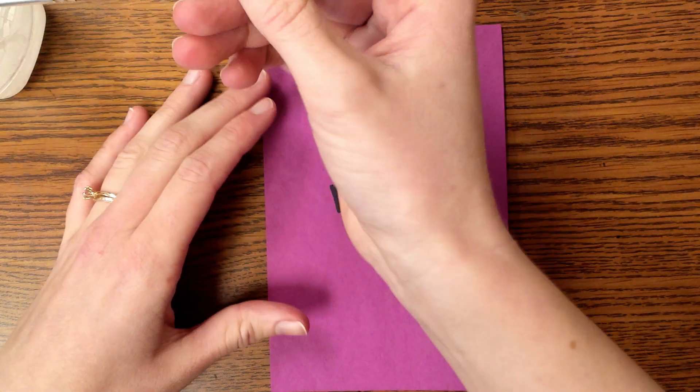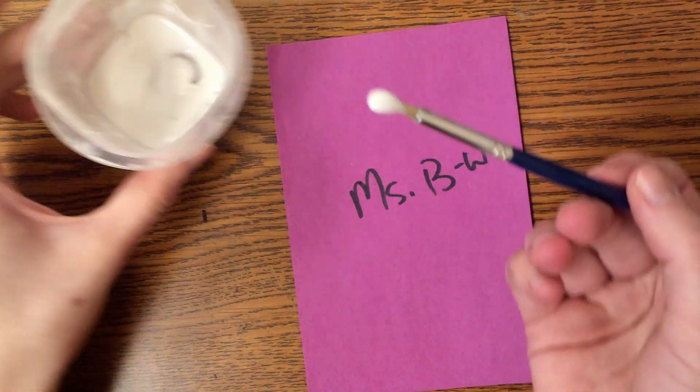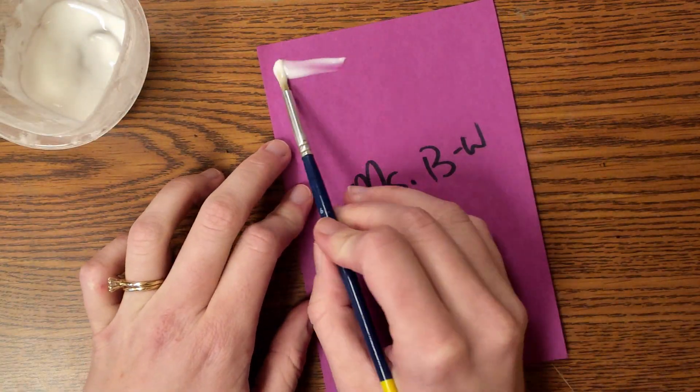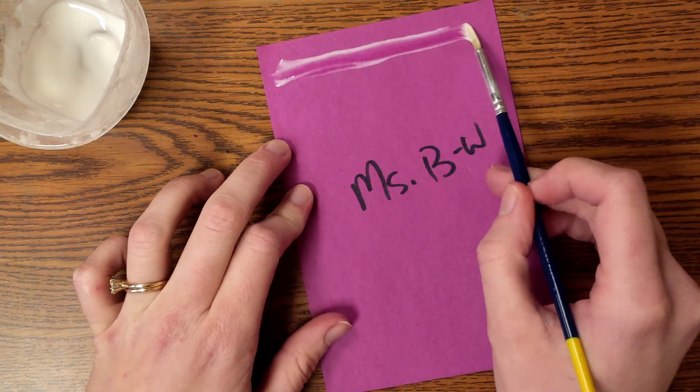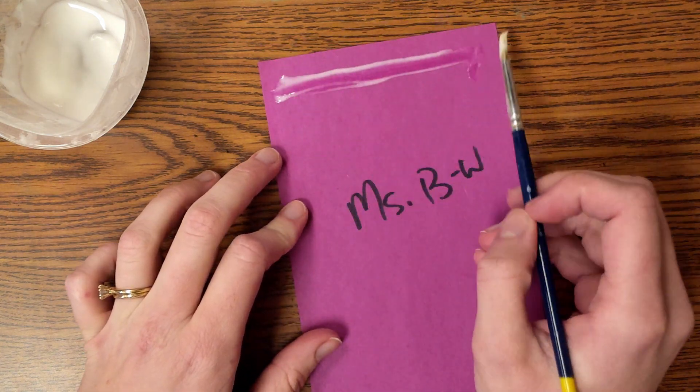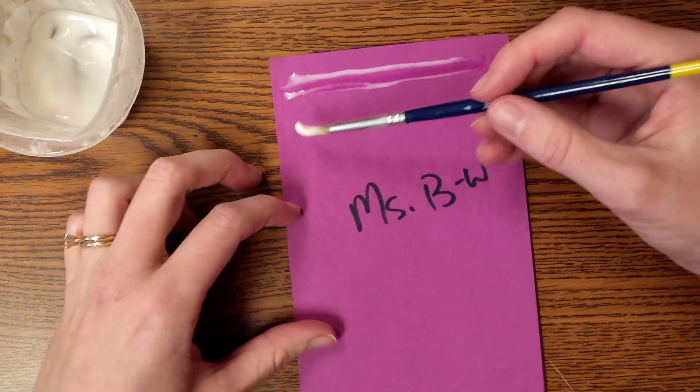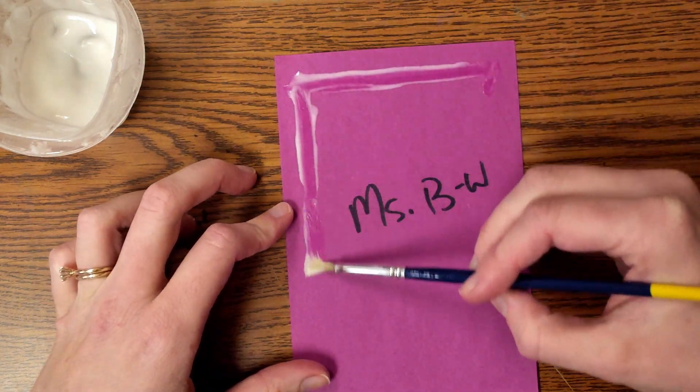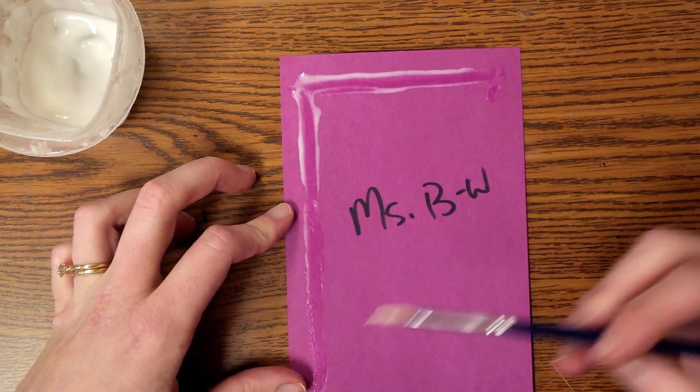So when I'm gluing, what I want to do is get just enough glue on the tip and I want to smooth it down. I don't want to leave it in a big sticky stripe, and I'm not going exactly up to the edge. I'm leaving just a little bit of buffer. That'll help me do a neater job so the glue doesn't squish out.